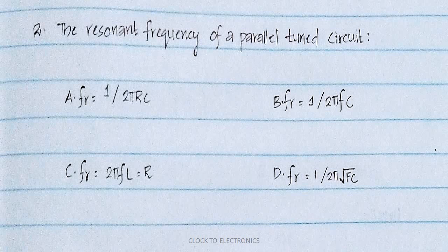The next question is about the resonance frequency of a parallel tuned circuit. The options are: FR is equal to 1 by 2π RC, FR is equal to 1 by 2π FC, FR is equal to 2π FLR, and FR is equal to 1 by 2π √LC.